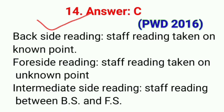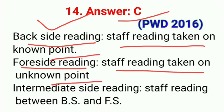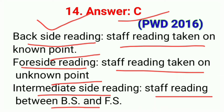Answer is C, back sight reading. Staff reading taken on an unknown point is a foresight reading. Staff reading taken on an unknown intermediate point is an intermediate sight reading. Intermediate sight is the staff reading taken between back sight and foresight.